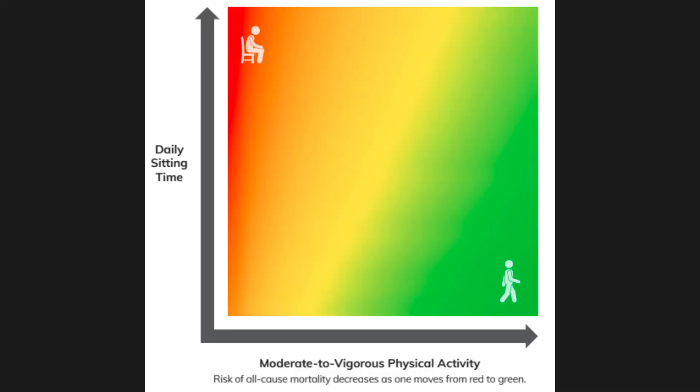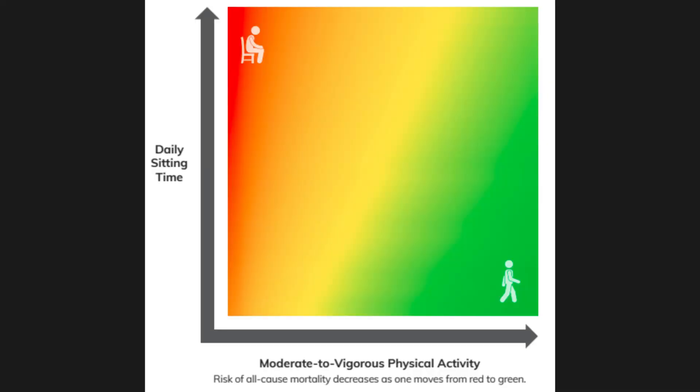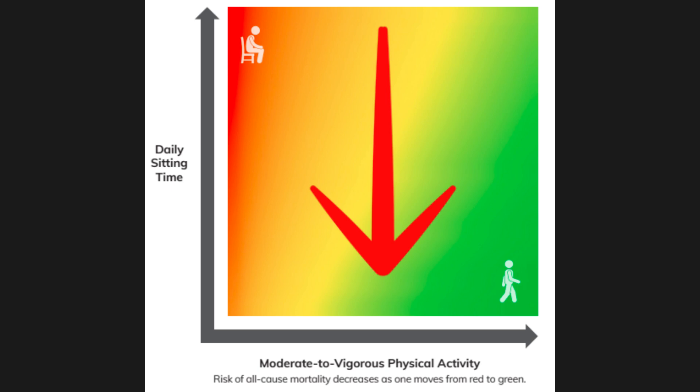If we look at this graph, it makes a little bit of sense. As you increase the amount of moderate to vigorous activity, you will slowly improve your risk for all-cause mortality. Similarly, if you kept your amount of moderate to vigorous activity the same and decreased the amount of sitting you do throughout the day, you will gradually see improvements in your risk for all-cause mortality.